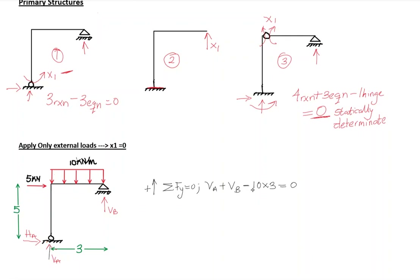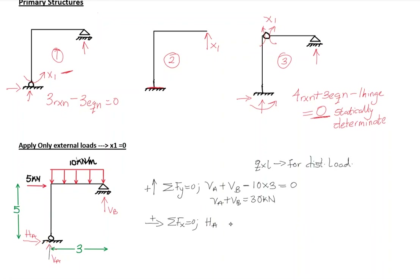Converting the distributed load to a point load gives q × L. So VA + VB = 30 kN. For the second equation, the sum of forces in the x-axis equal to zero: we have HA and 5 kN, so HA + 5 = 0, giving HA = −5 kN. This means the direction of HA has to change.